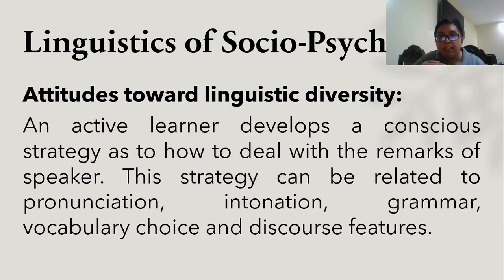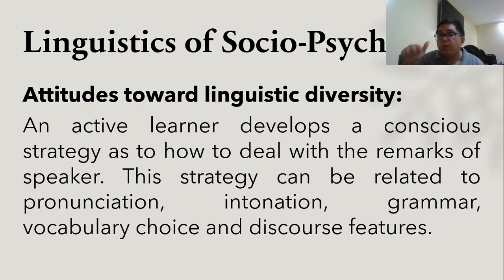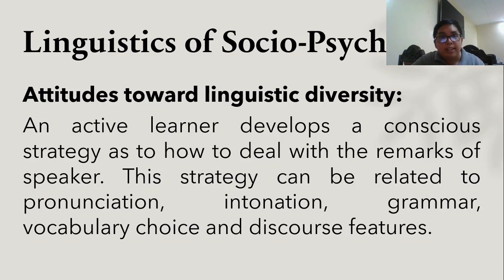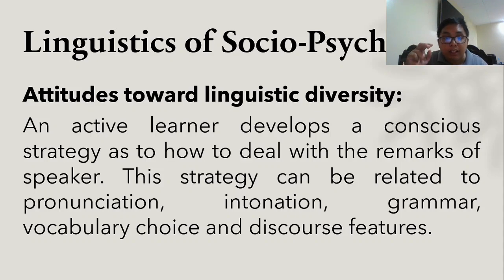Now I present the linguistics of social psychology — this is what you need to remember, especially as you communicate with many people. There are three attitudes related to linguistic diversity: convergence, divergence, and hyper-correction, which will be discussed in turn. An active learner develops a conscious strategy as to how to deal with the remarks of a speaker. This strategy can be related to pronunciation, intonation, grammar, vocabulary choice, and discourse features. Being willing to learn the language also means being conscious of what you speak so you can correct yourself in specific situations.